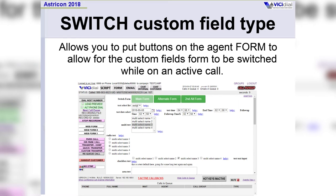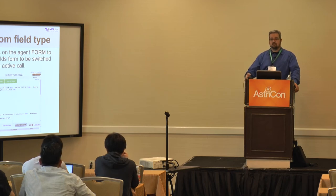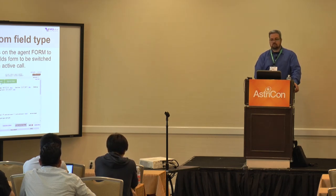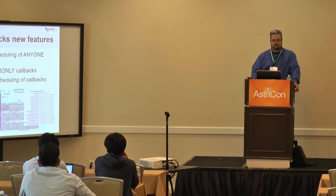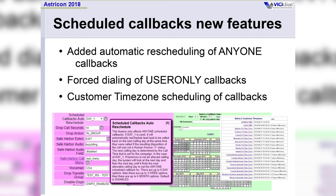The switch custom field type was a lot of fun — this is the ability to use multiple custom fields for the same phone call, multiple sets of custom fields. The application here was insurance: a client would get somebody on the line and talk to them about life insurance, and then it might get into homeowner's insurance or auto insurance. By clicking buttons at the top of the form, they can switch between those alternate forms. All the data is stored in VICIdial's database and gives them the ability to offer multiple products and collect multiple sets of information on the same phone call. We also did a lot of work on scheduled callbacks: multi-time zone scheduled callbacks, forced dialing of scheduled callbacks, and automatic rescheduling.